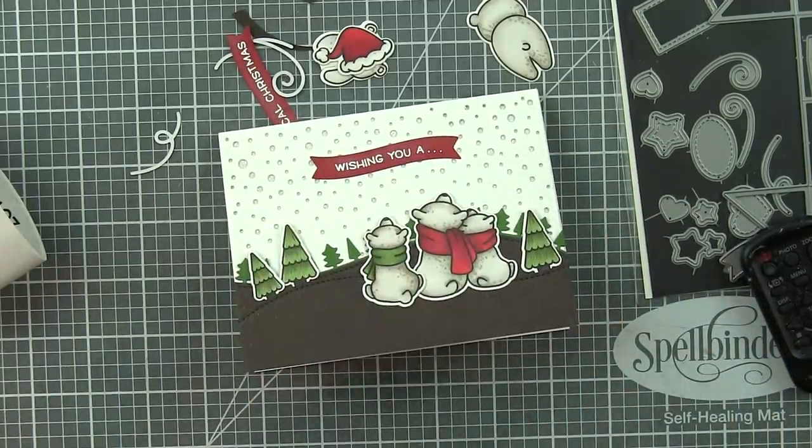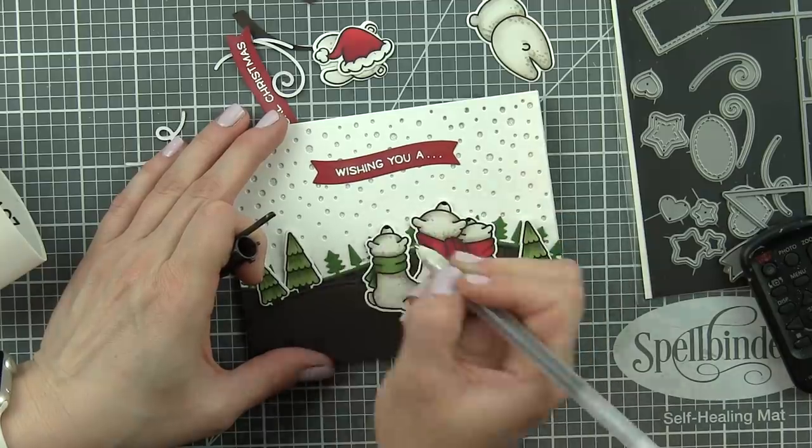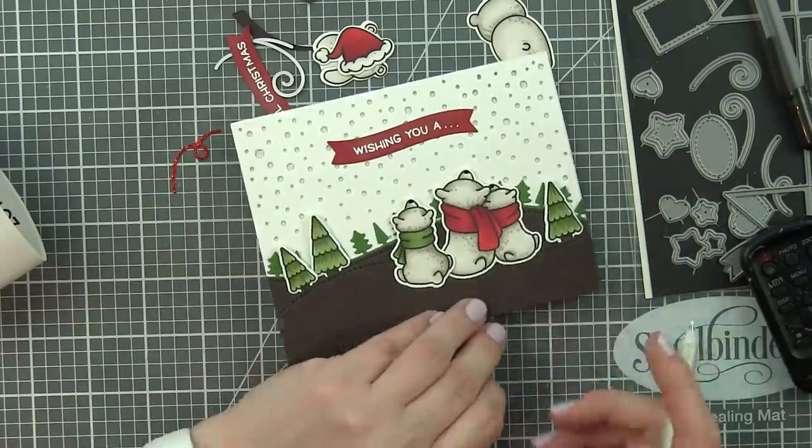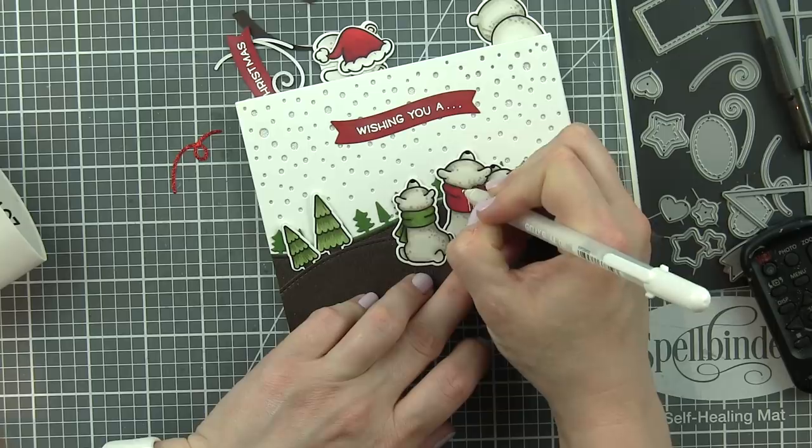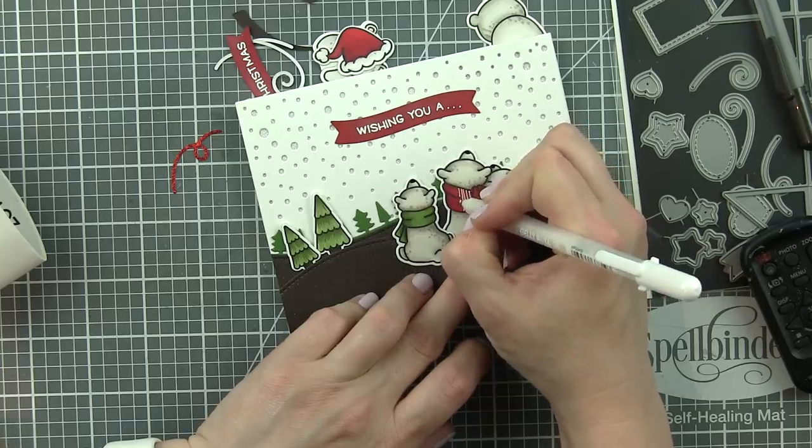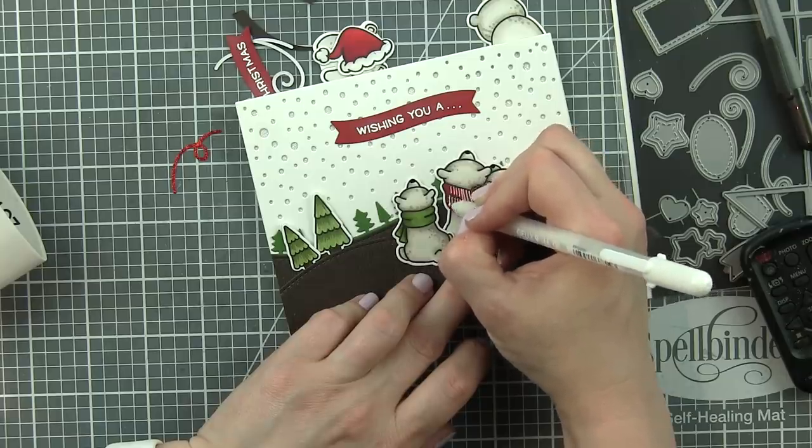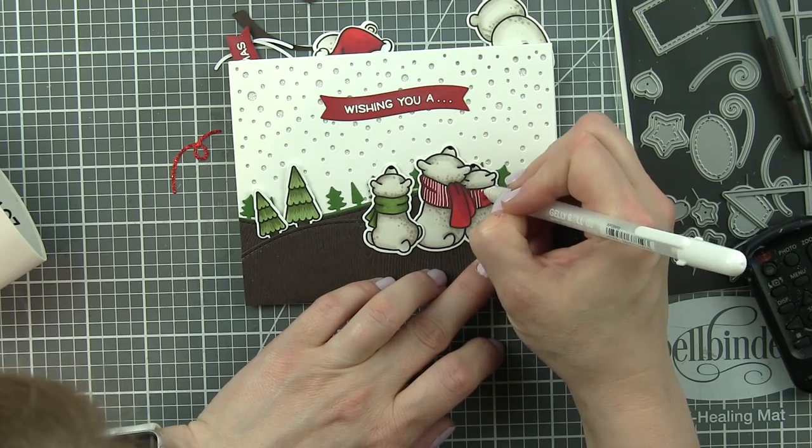And now we can move on to the inside as soon as we get our embellishing done. This is kind of like my final thing I always do. So I'm finishing up the front and then we'll move to the inside. But I decided to do a stripe design for the red scarf that the two bears are sharing.